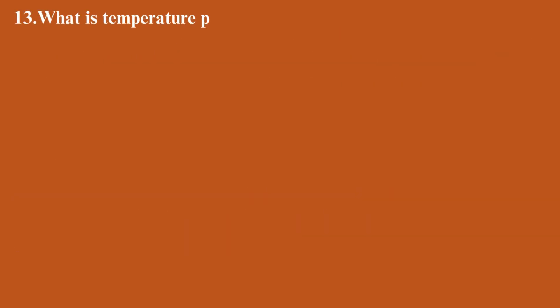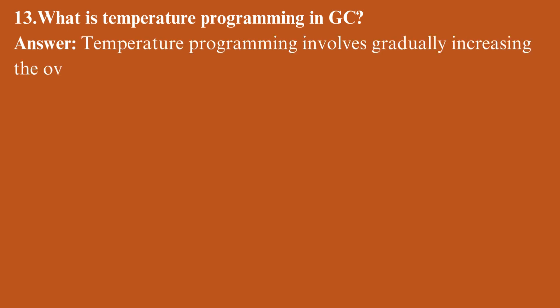What is temperature programming in GC? Temperature programming involves gradually increasing the oven temperature during a run to improve separation of compounds with varying volatilities.